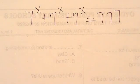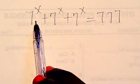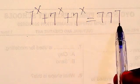Hello, you're welcome. We want to solve this exponential equation. We're going to say 7 to the power x plus 7 to the power x plus 7 to the power x equals 777.